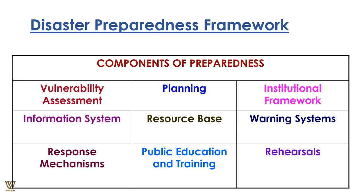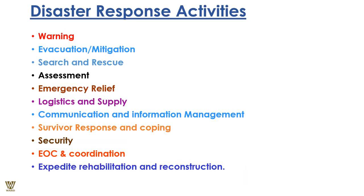The preparedness framework covers three areas: the vulnerability system, planning, and the institutional framework. The vulnerability system involves having a vibrant information system and appropriate response mechanisms. Planning covers resources, public education, and training. The institutional framework includes community participation in warning systems, rehearsals, and preparing people mentally, psychologically, and emotionally for a disaster.